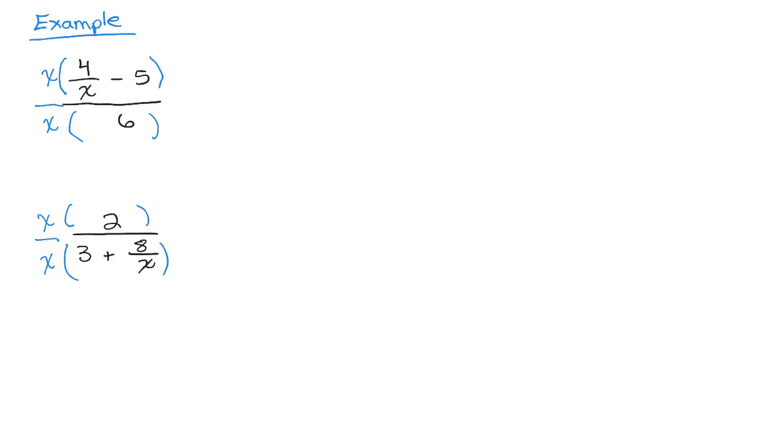OK, here we go. So I'm just going to do the distributive property in the numerator, x times 4 over x minus x times 5. Now, you could write it as x times 5 or 5 times x, right? Because that's the commutative property in multiplication. And in the denominator, I have just x times 6. I'm just going to write that as 6x.